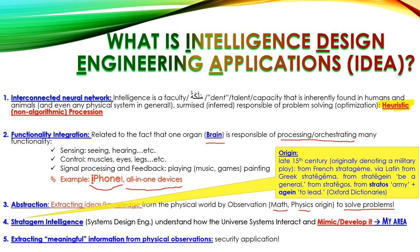The fourth way is stratagem intelligence — related to systems design engineering — understanding how universe systems work and interact together, mimicking how the universe works in harmony, and developing something similar. The fifth way is using intelligence to extract meaningful information from physical observation — related to security applications. We say 'gather intelligence' meaning we extract information from the observed world.